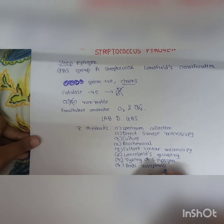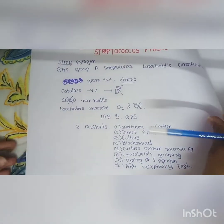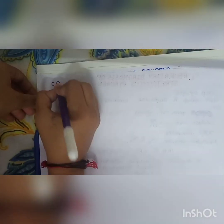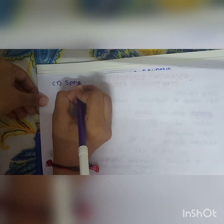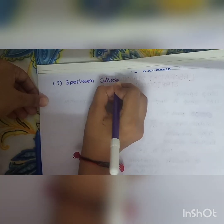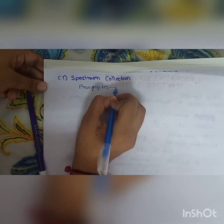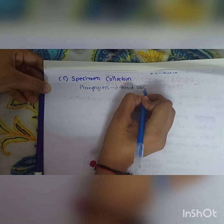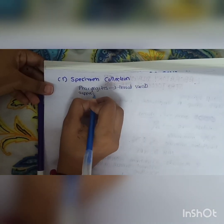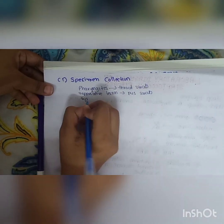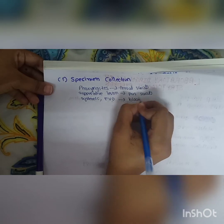Let's talk about the first method: specimen collection. We take specimens according to the type of infection. The most common streptococcal infection is pharyngitis, for which we take a throat swab. If there is a purulent lesion — formation or discharge of pus — we take a pus swab. If there is a systemic effect or fever of unknown origin (FUO), we take blood.